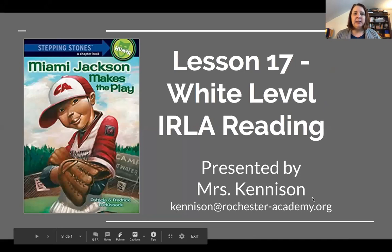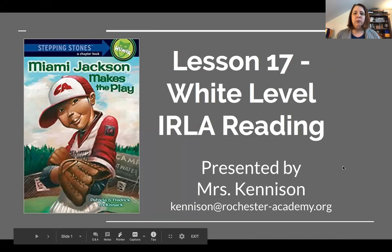This is lesson 17, and of course we've been practicing inference questions because that is something that a reader really needs to be good at. But because this is the end of the story, we will also be talking about theme. This is a big skill that all readers have to know how to identify.